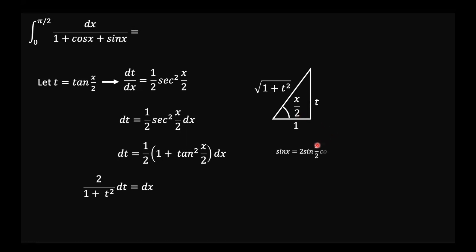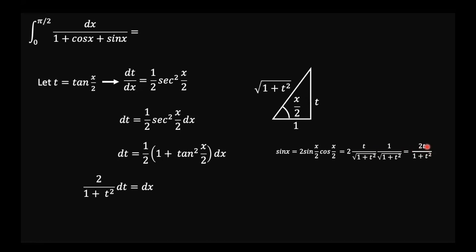We know that sine x equals 2 sin(x/2) cos(x/2). Substituting, sin(x/2) is opposite over hypotenuse, which is t over the square root of (1 plus t squared), and cos(x/2) is adjacent over hypotenuse, which is 1 over the square root of (1 plus t squared). Multiplying numerators and denominators, we find that sine x in the t domain is 2t over (1 plus t squared).